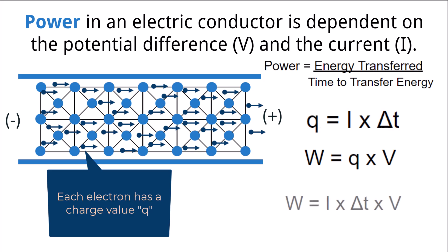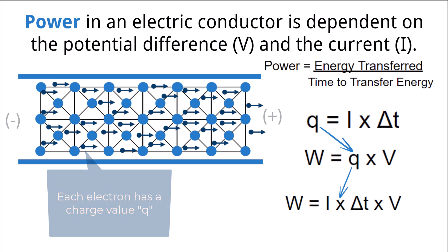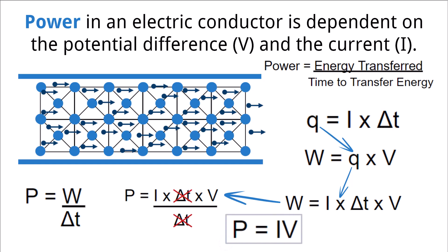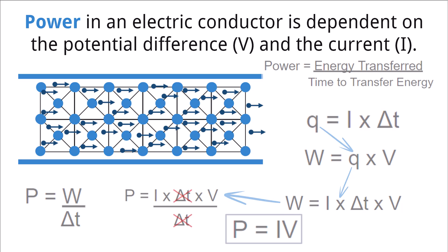Making a substitution for the charge value, the work done is the current times the change in time times the potential difference. Since power is the amount of energy transferred over a period of time, power is work divided by the change in time. Substituting the work value in terms of current and potential difference, the change in time cancels itself out, leaving the statement: power is equal to the current times the potential difference.